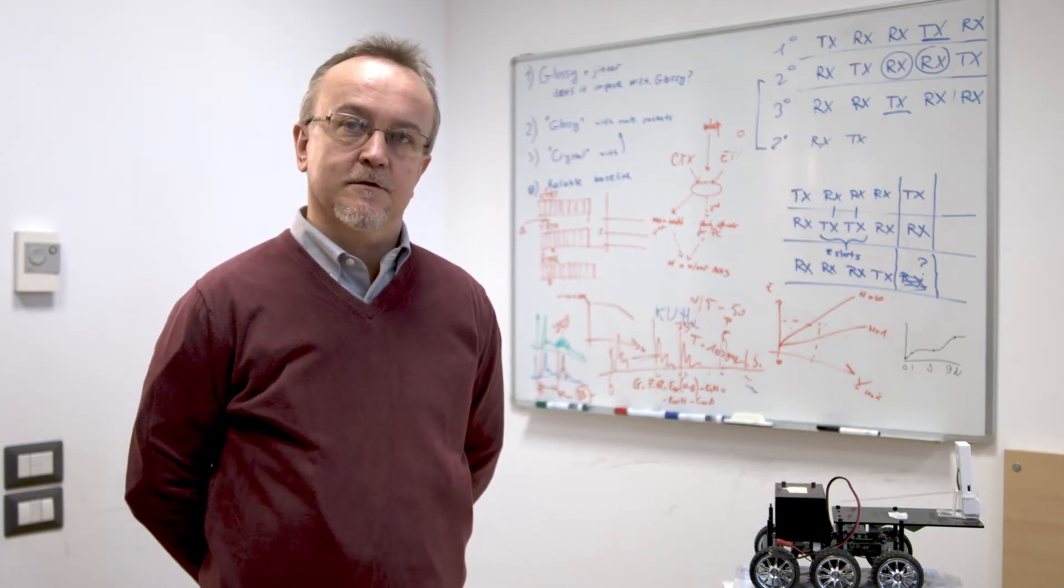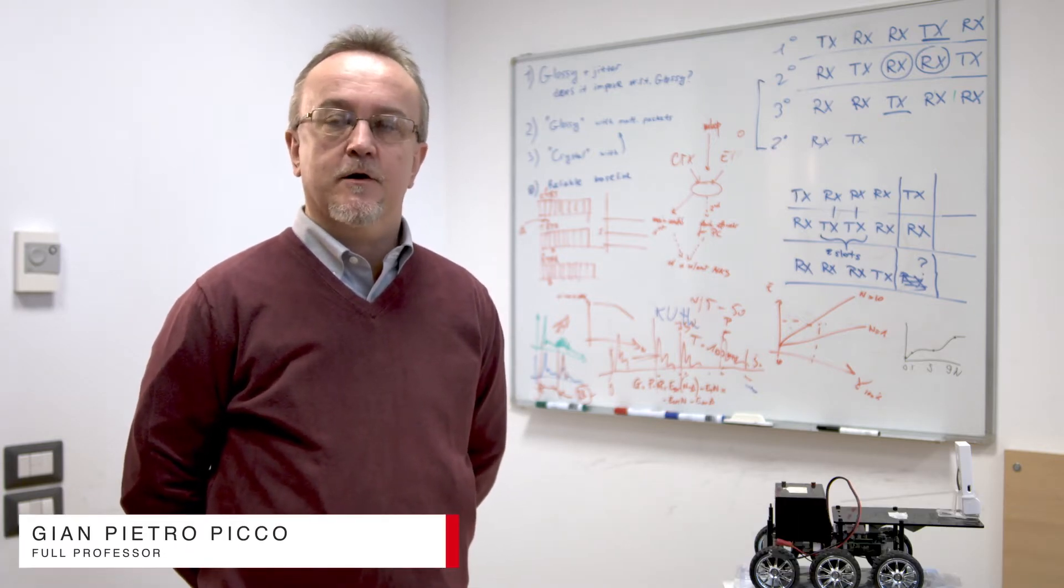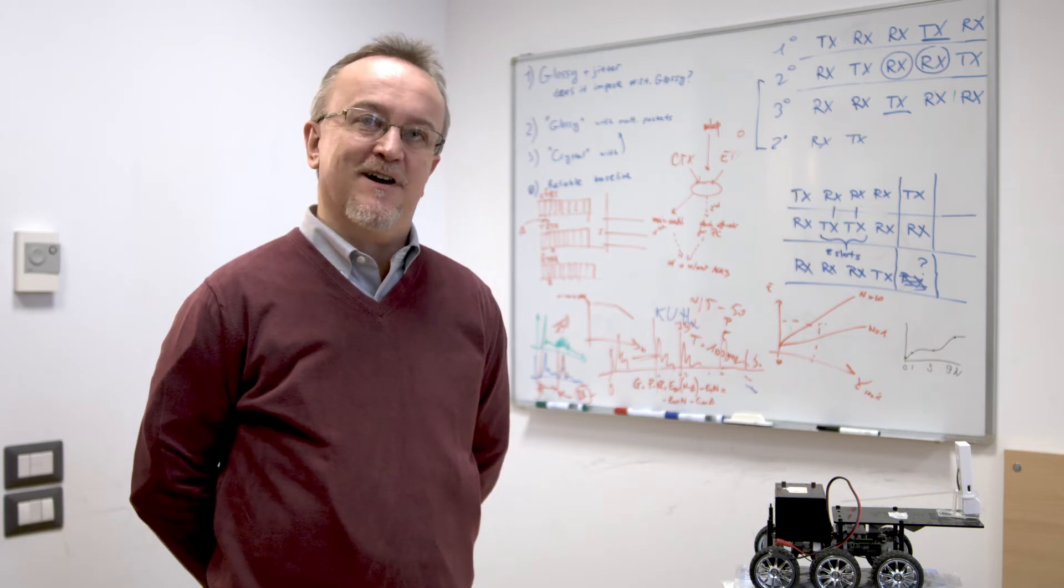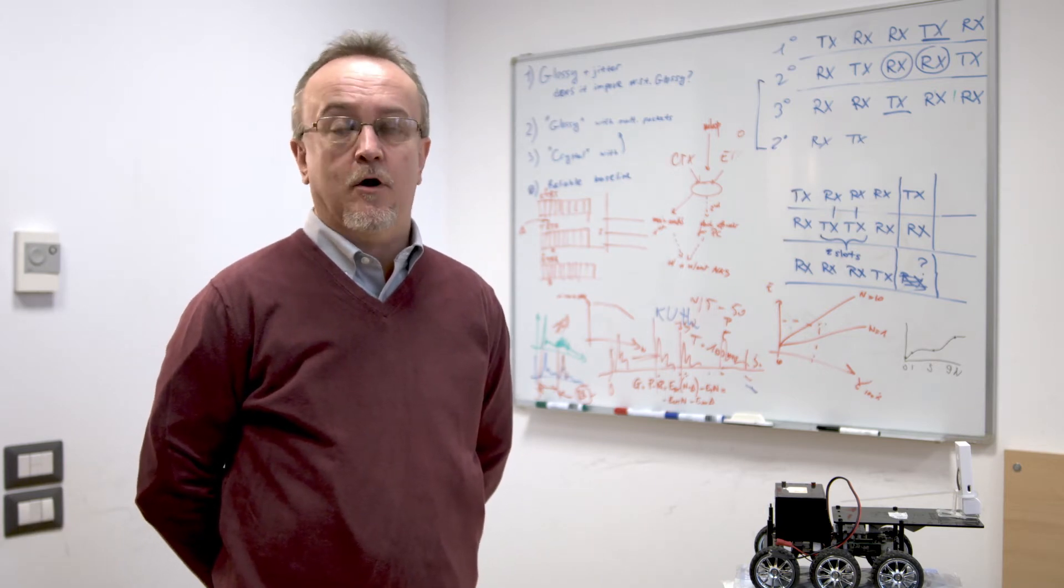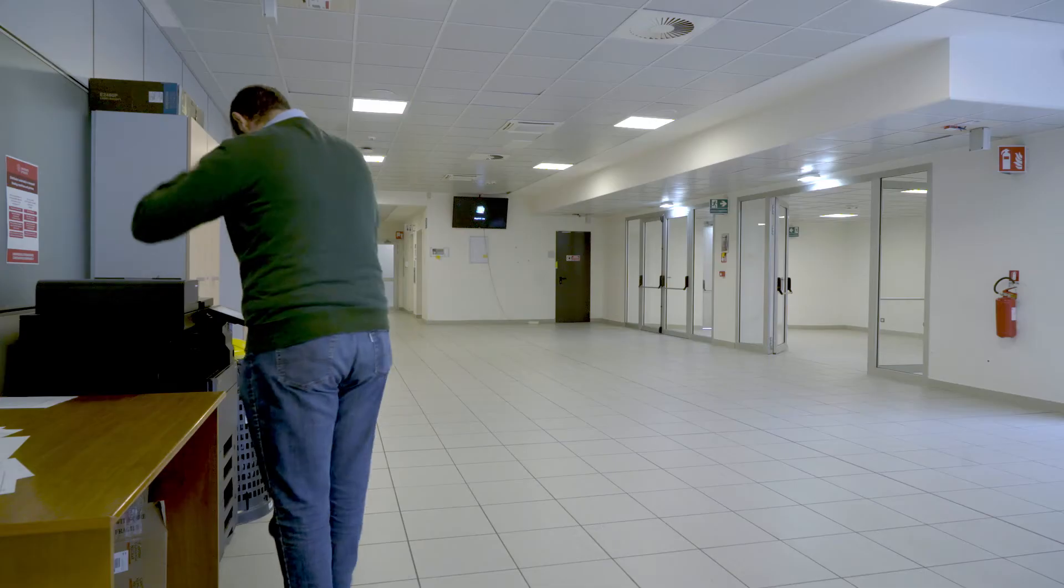The Internet of Things is a vision where the physical and digital worlds blur into each other. This requires technology that enables devices attached to people or objects to coordinate and localize themselves in an efficient and reliable way.